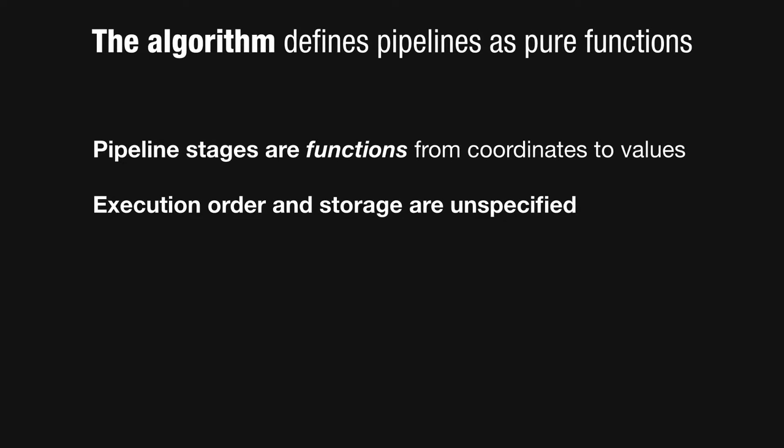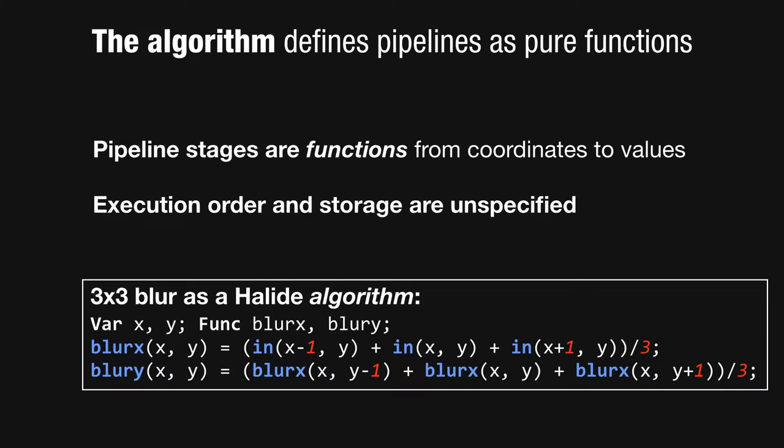Once we strip out the concerns of scheduling, the algorithm is defined as a series of functions from pixel coordinates to expressions giving the values of those coordinates. For the 3x3 blur, the first stage blur_x is defined at any point (x, y) as the average of 3 points in the input, and blur_y is the average of 3 points in blur_x. These functions have no side effects and can be evaluated anywhere in an infinite domain — x and y can range from negative to positive infinity and these are still well-defined. The required region of each stage is inferred by the compiler based on how much of the output you actually want.